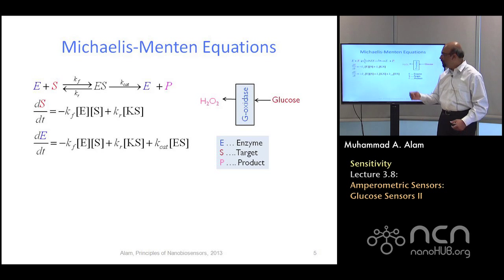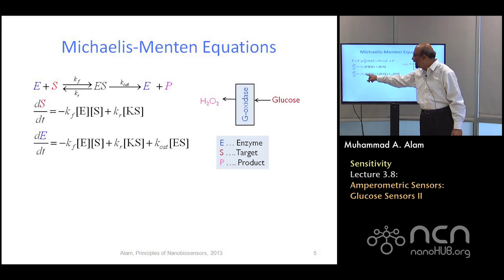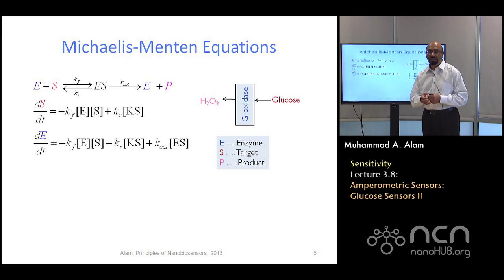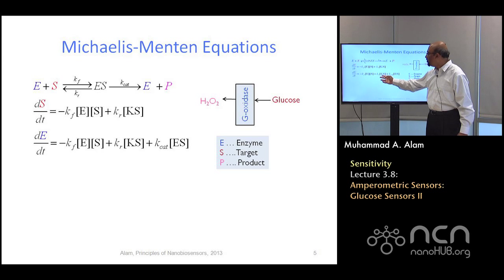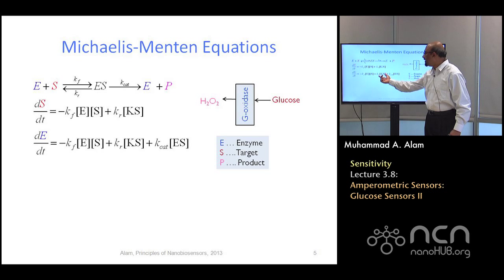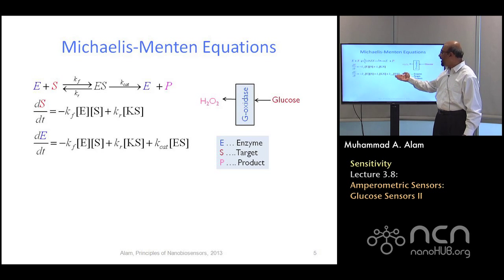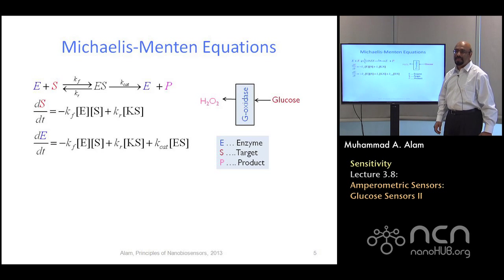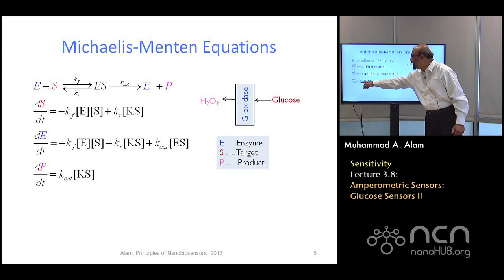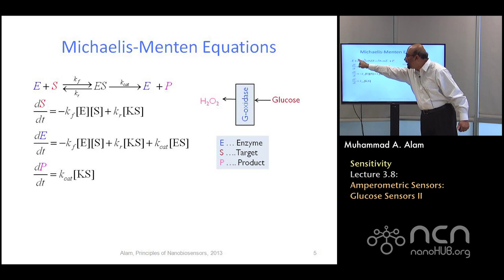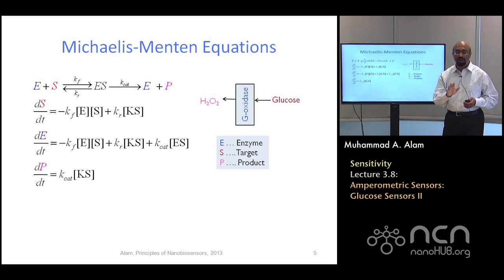What about the fate of the enzyme? Every time a target molecule binds to it, the free enzyme is gone — that's a minus term. Every time it either falls apart (proportional to Kr) or goes forward successfully, I have the enzyme back. In both cases, those two terms are positive. The product simply depends on the rate at which ES is dissociating forward, and that is directly proportional to the number of joint enzyme-substrate molecules. It cannot go directly from target to product without the intermediate state assisted by the enzyme.